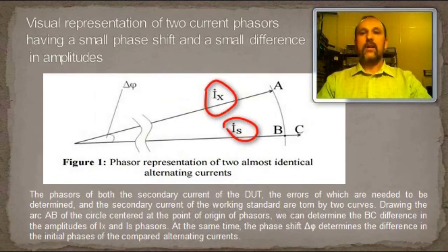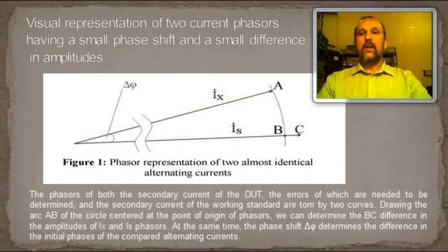When calibrating current transformer, two alternating secondary currents are compared, different in the initial phase in units or tens of angular minutes. The difference between the amplitude values of the compared currents is often thousands, hundreds and or tens of a percent for the calibrating current transformers used in power engineering. This often convenient to represent alternating current as a phasor to solve electrical engineering tasks.